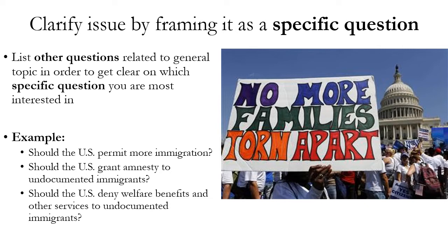These are some examples of particular issues related to the general topic of immigration: 1. Should the U.S. permit more immigration? 2. Should the U.S. grant amnesty to undocumented immigrants? 3. Should the U.S. deny welfare benefits and other services to undocumented immigrants? You could also add the original issue: what should the U.S. immigration policy be? That's a broader issue, but it can still be framed as a single question.